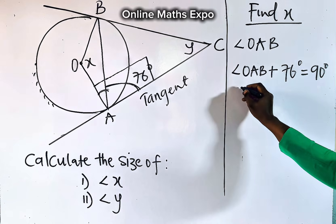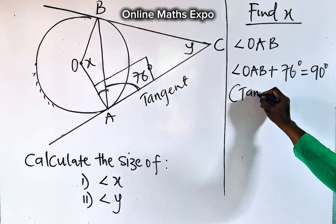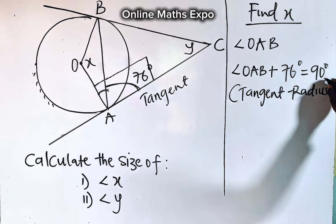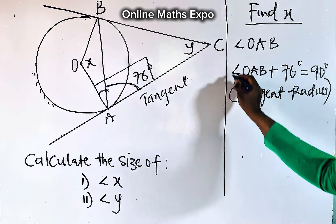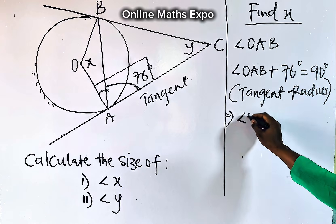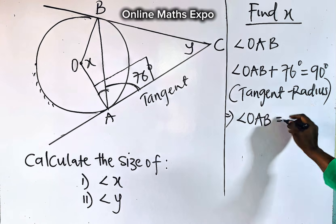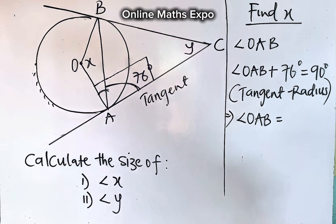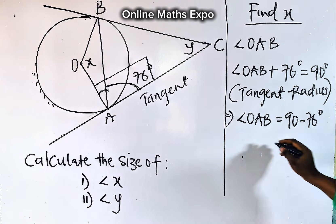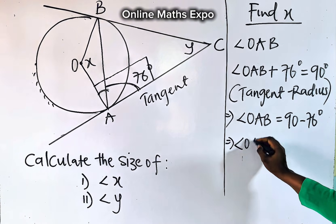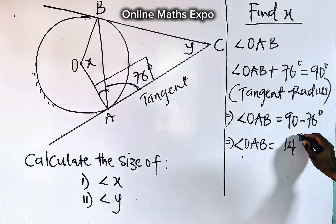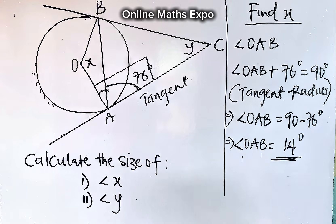We have angle OAB plus this particular angle, which is 76, should be equal to 90 degrees. Why is it 90? Our reason is the tangent and the radius theory. So if this is true, what do we do? We have angle OAB should be equal to 90 take away 76. And when you do that, angle OAB, if you subtract this, it gives you 14 degrees. So this angle is 14 degrees.